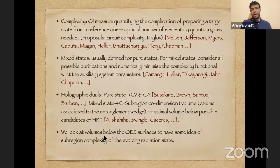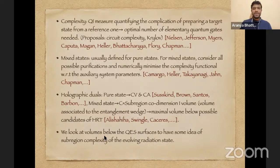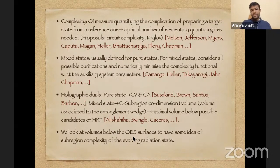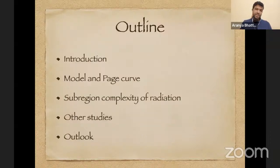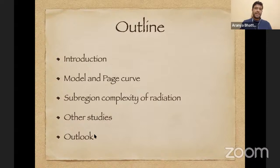What we do is look at volumes below the quantum extremal surfaces at different times, especially to see what happens when the page transition takes place. We found in a previous paper that there is a jump in subregion complexity at the page transition point. The idea is to build a general picture of the evolving radiation state.